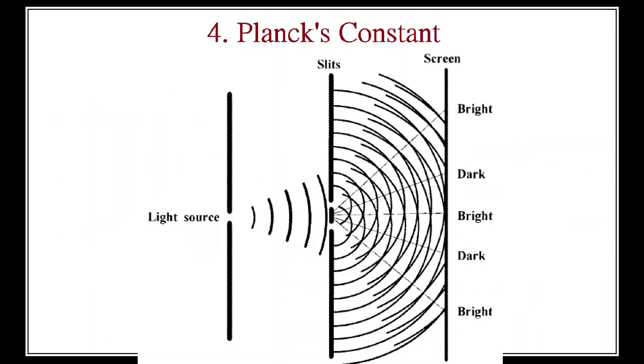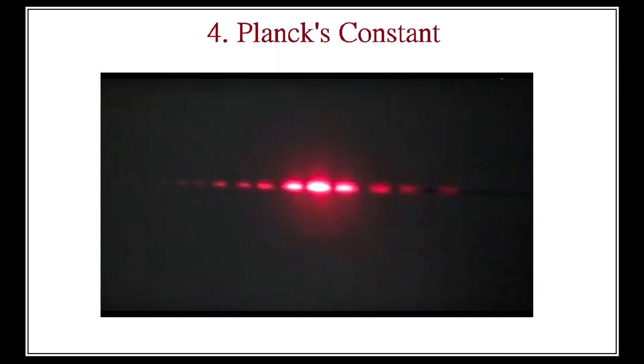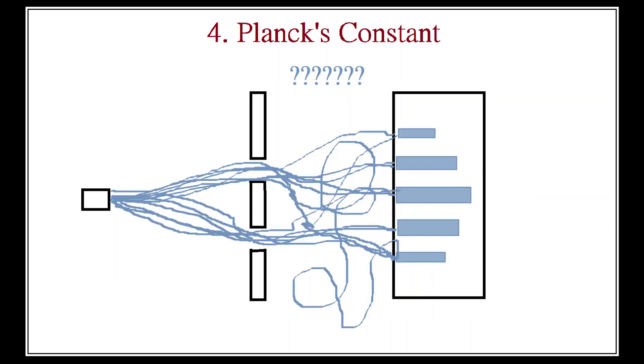Take a laser, you shine it through two narrow but equal slits, and the emerging light will form a striped interference pattern on the back wall. Particles don't form interference patterns. That is a property of waves. Hence, we conclude that light comes in waves.